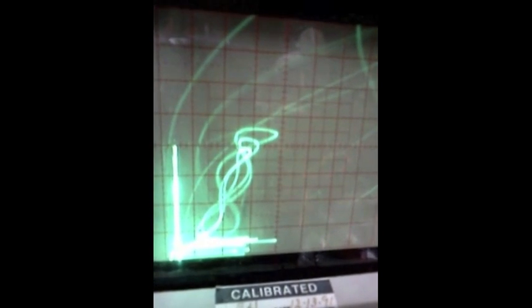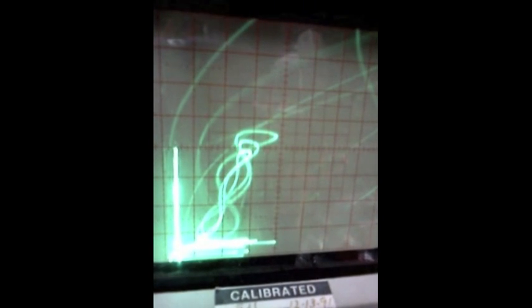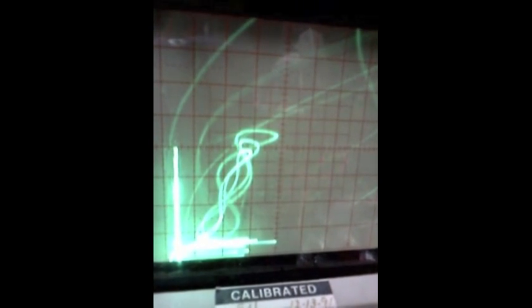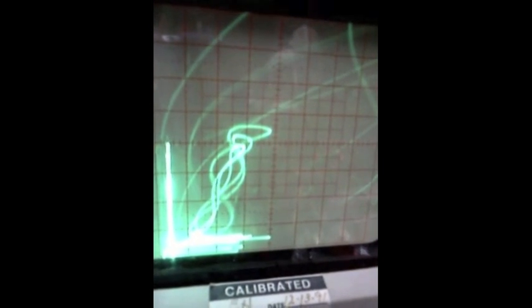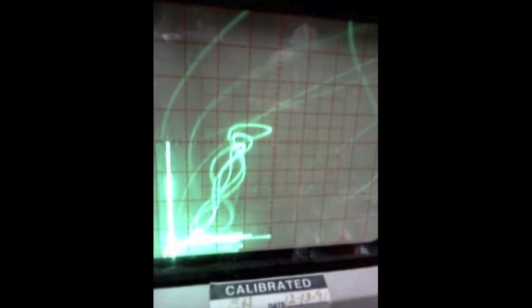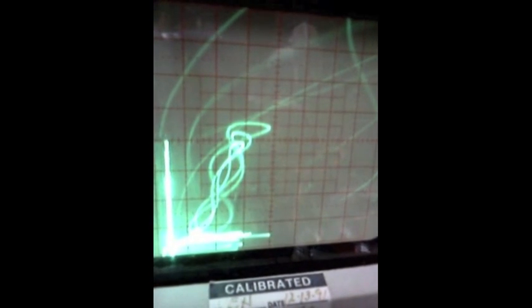And just for reference, I'm actually on a 10x probe right now. And we are at about, for the 10x probe, about 20 volts per division. And as you can see how the voltage concentrates.